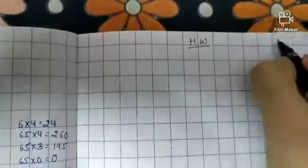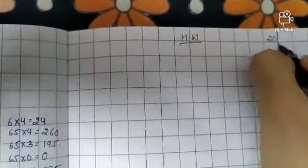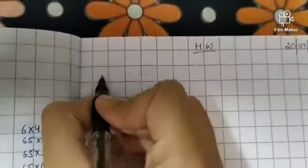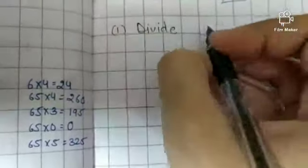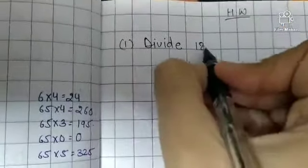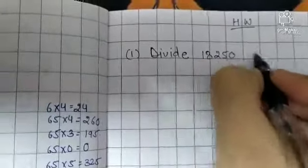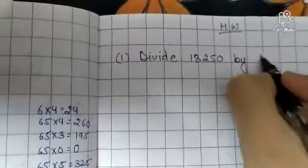Write down homework. Put today's date 28th of July 2020. Question 1: divide 18250 by 55.